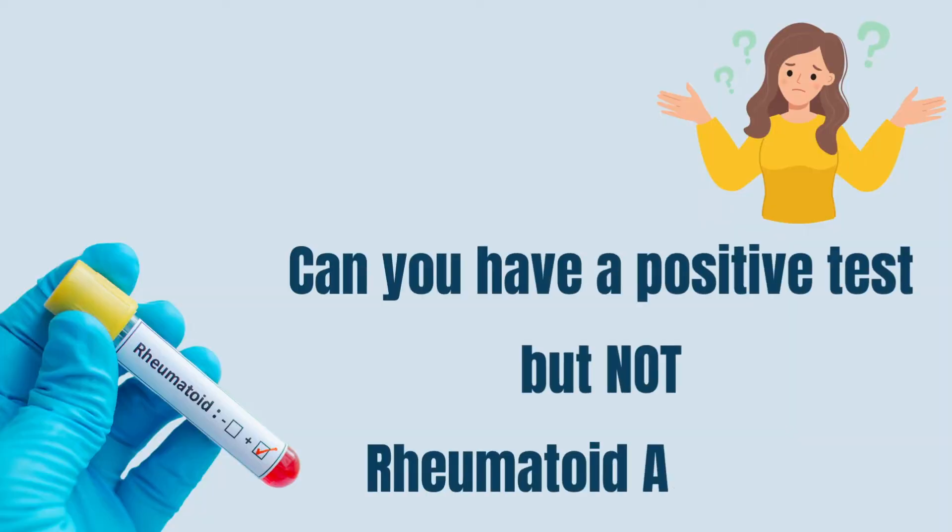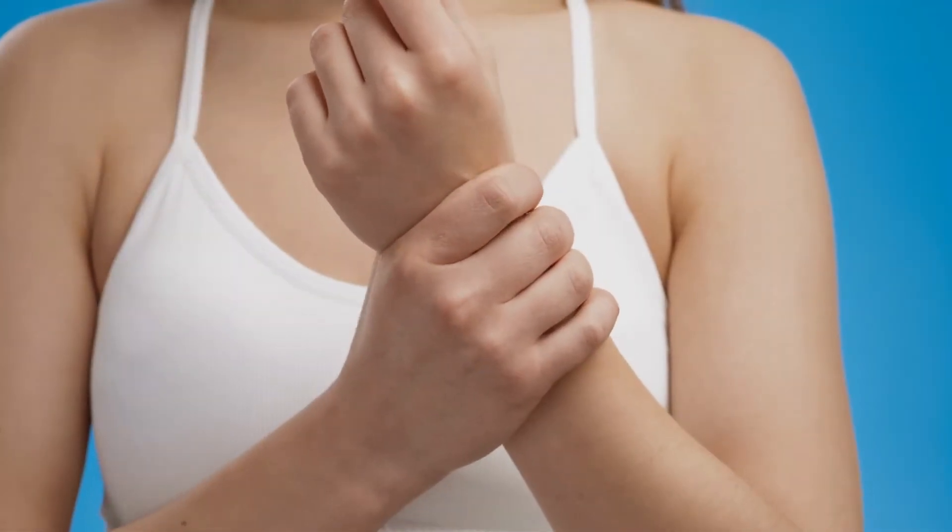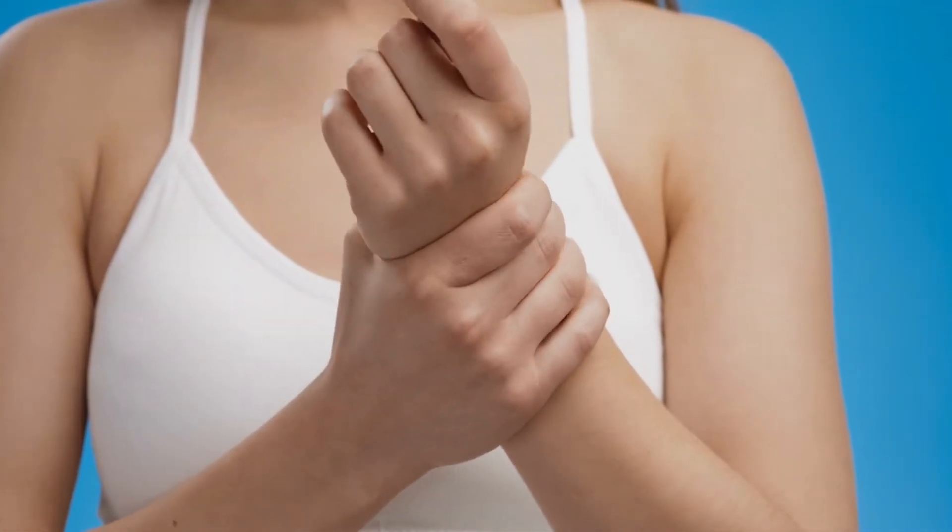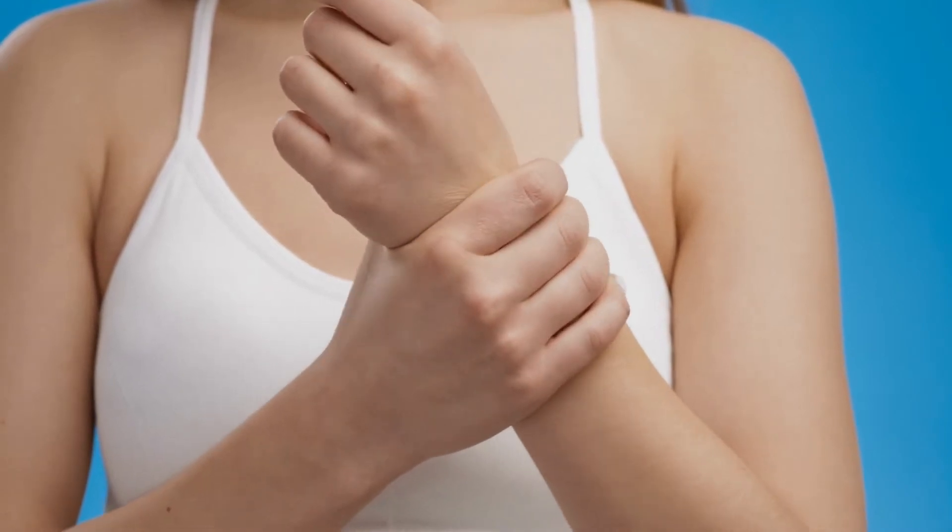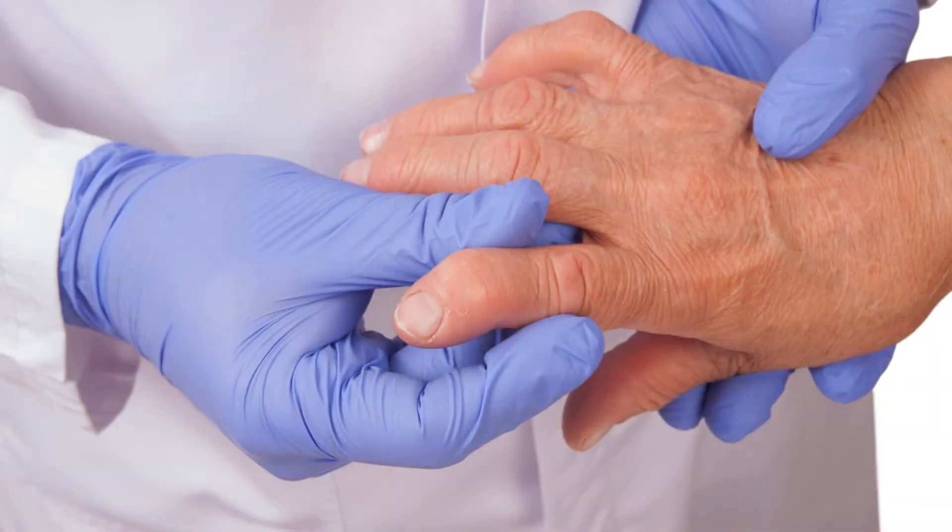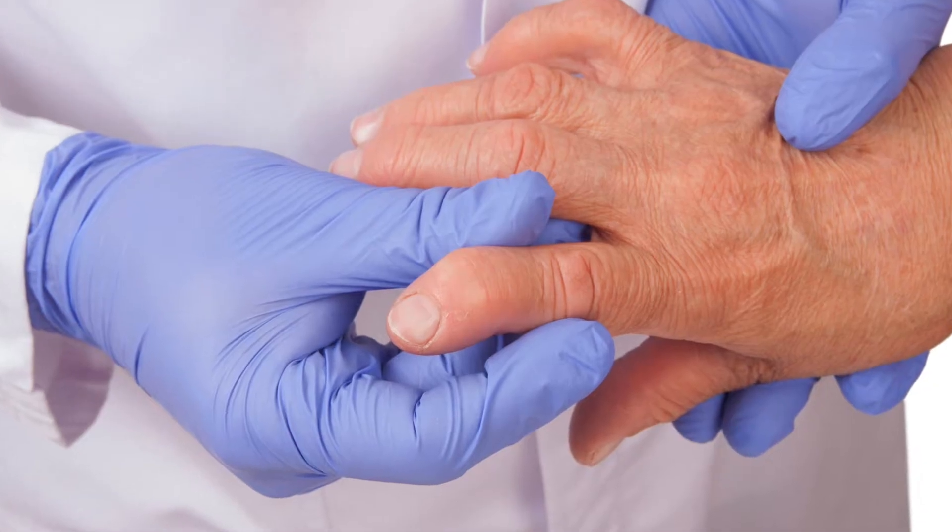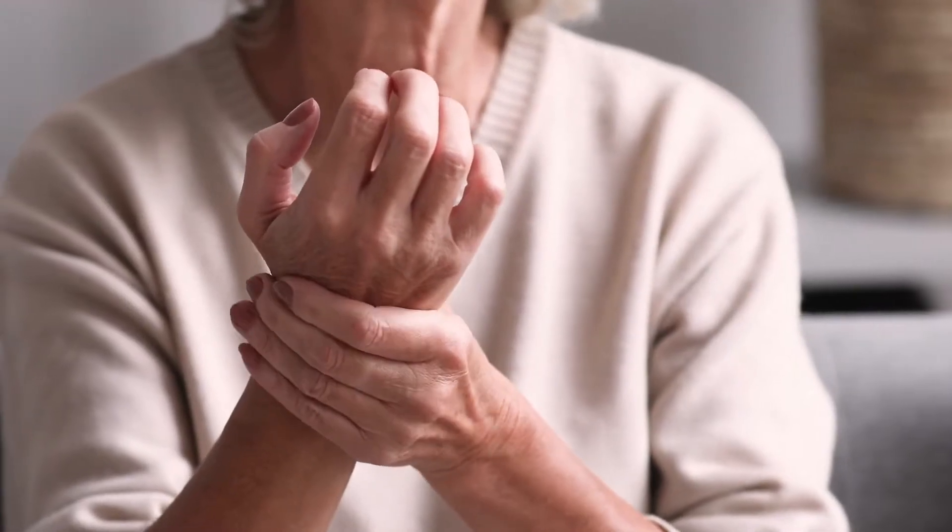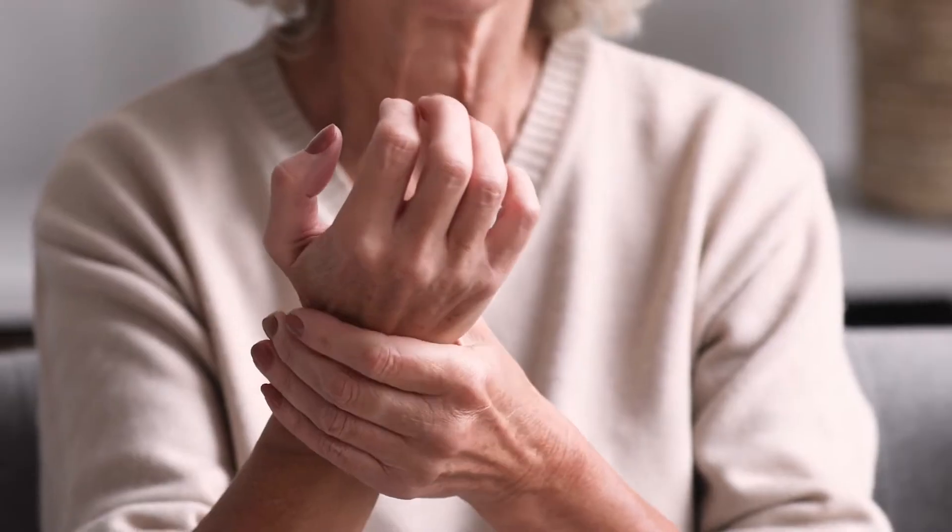Can you have a rheumatoid factor test positive and not have rheumatoid arthritis? As I mentioned, testing for rheumatoid factor is primarily done when doctors suspect rheumatoid arthritis. But rheumatoid factor is present also in other diseases and it is not diagnostic for rheumatoid arthritis. In about 30% of patients with rheumatoid arthritis, rheumatoid factor can appear many years before the diagnosis is made, sometimes even 10 years before a diagnosis.